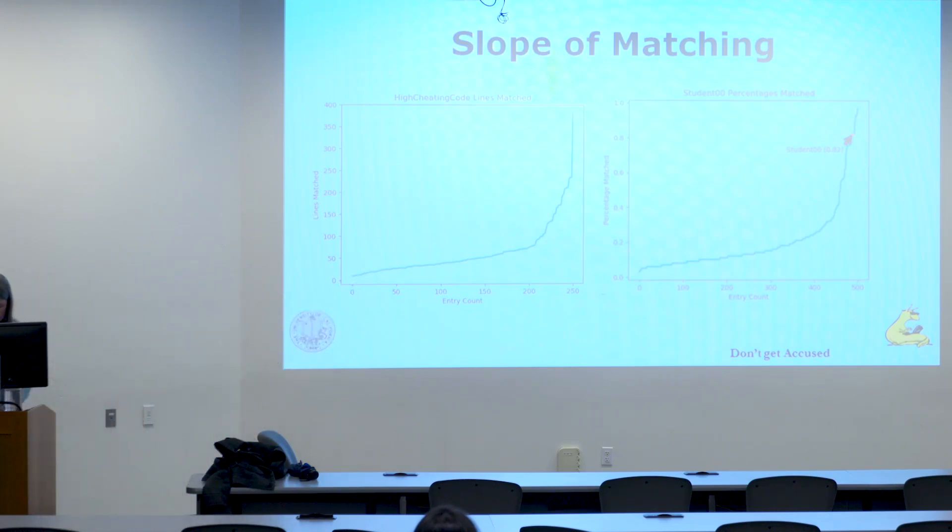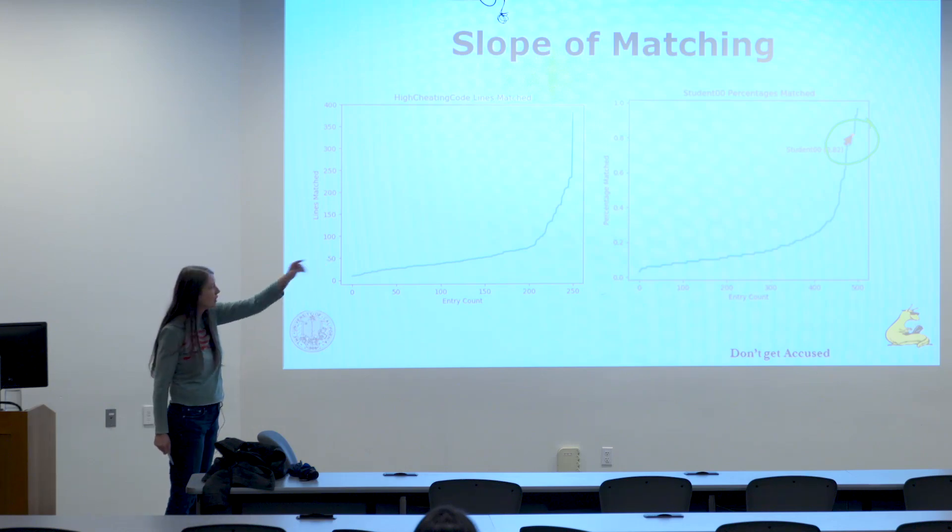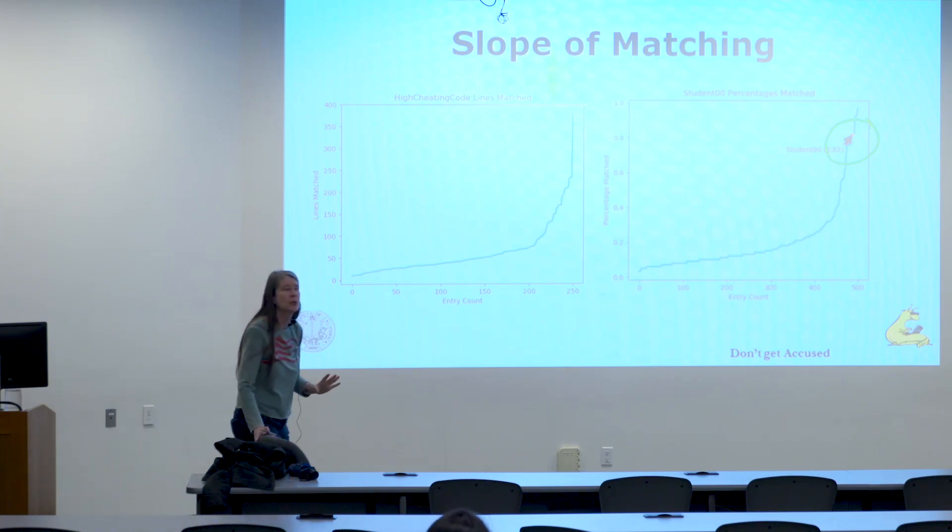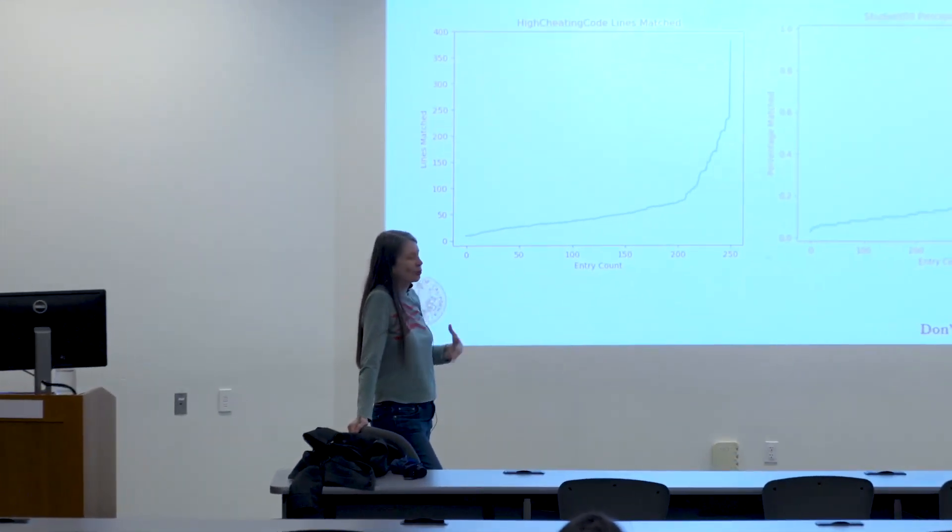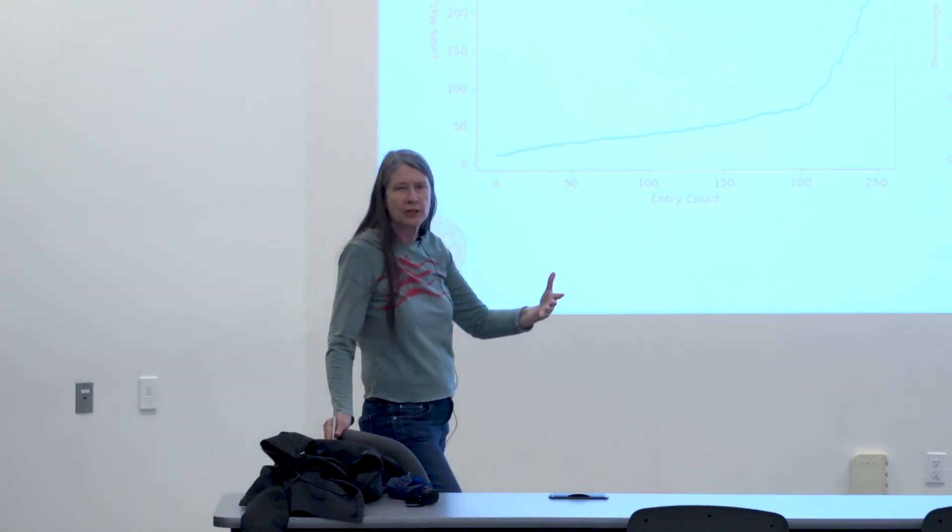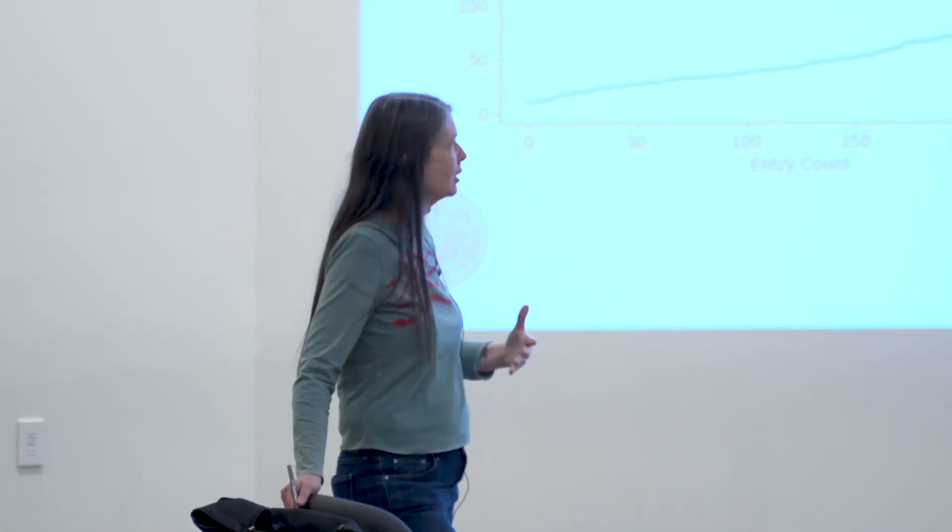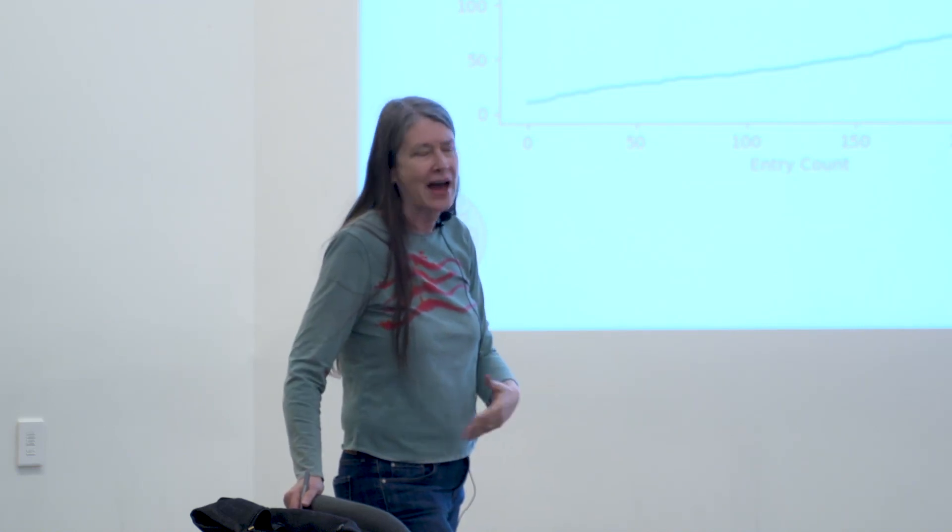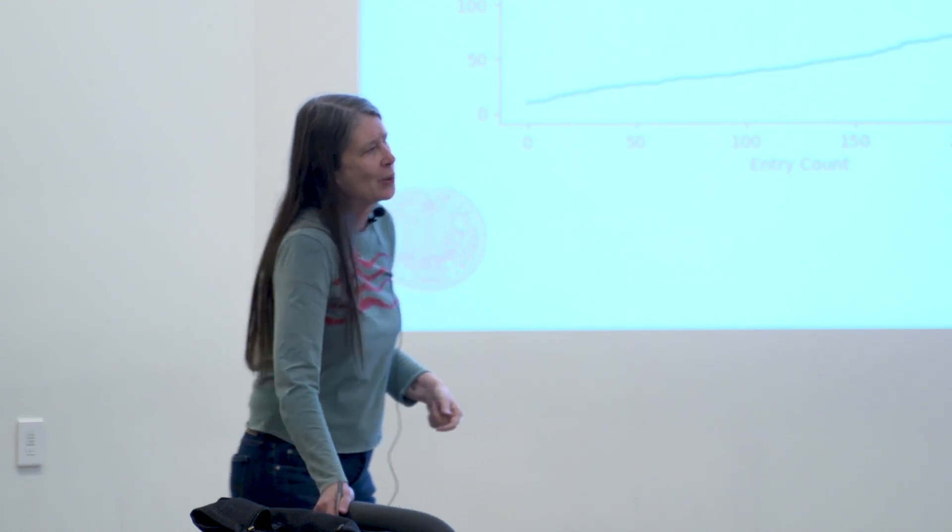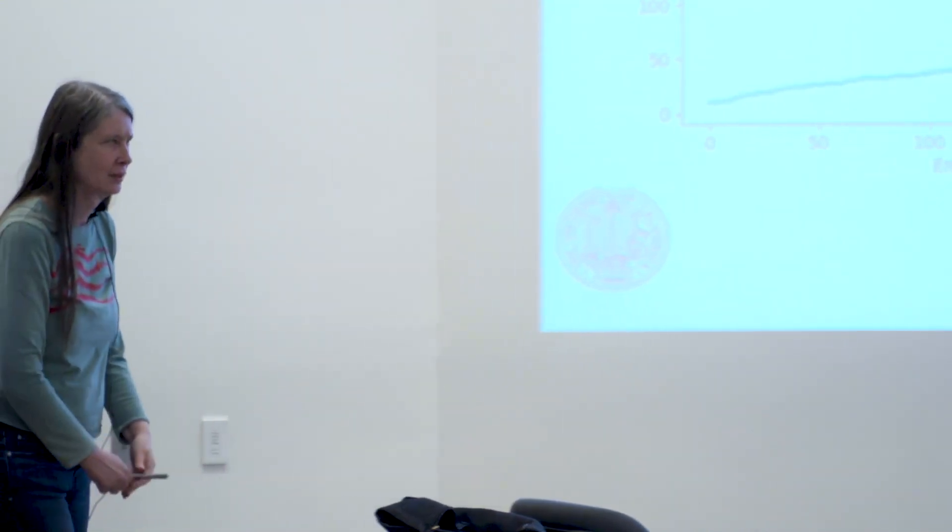And here we have all the students in the class and for a particular assignment, what percentage of code lines matched with anyone else. And once again, the professor will probably pick a threshold of what they're going to pay attention to. So for example, everybody below here, we're just not even going to investigate, they get a pass. And everybody up there, way high on the really vertical part, those are the ones that they're going to have to look at by hand. And realize if the instructor's trying to minimize their work, they're actually going to want to look at fewer cases. And that would cause them to look higher on the graph.